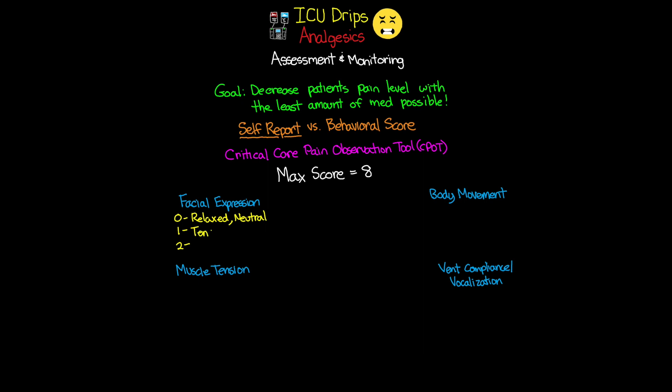A score of 2 is for patients who are grimacing. This includes everything in the tense category, but they'll also have their eyelids tightly closed, and you may also see their mouth opening and biting down on the ET tube.